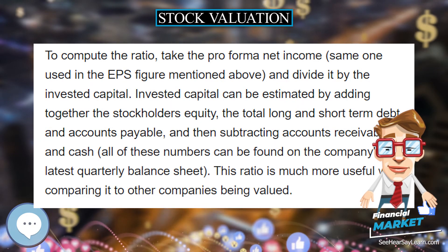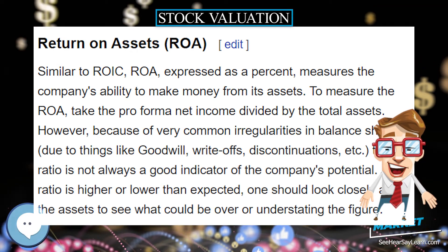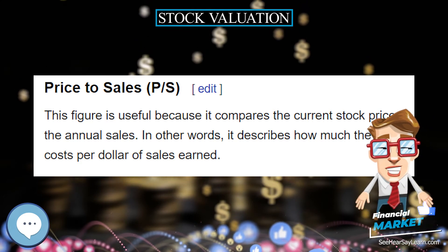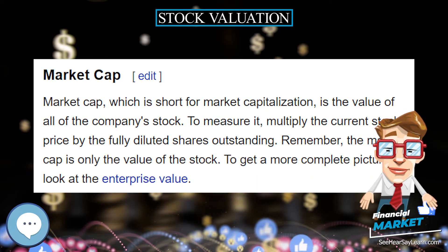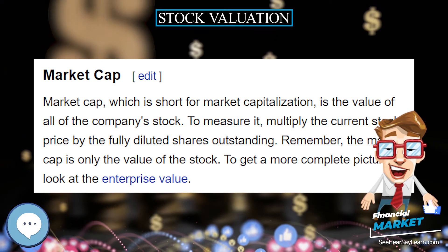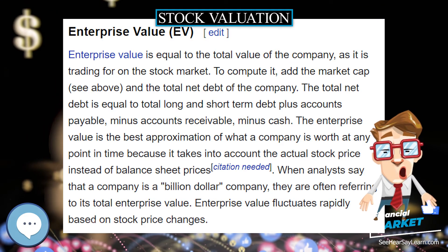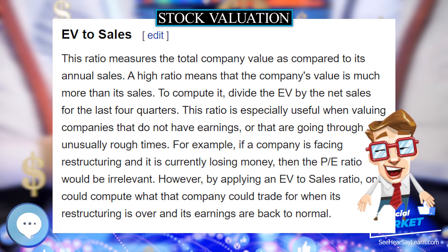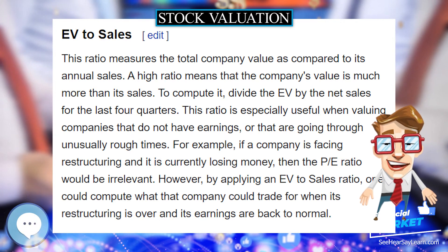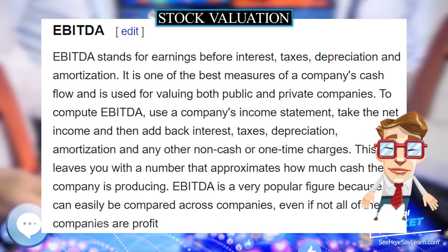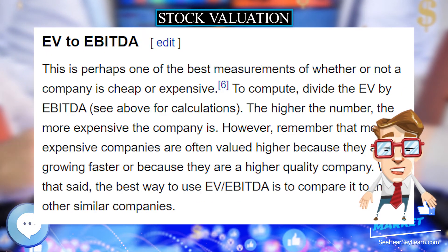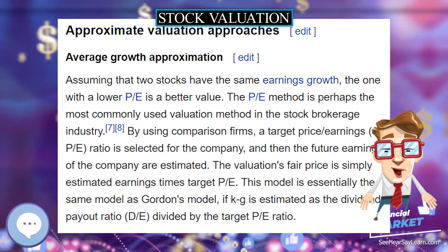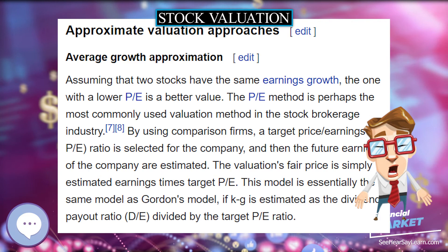EV to Sales. This ratio measures the total company value as compared to its annual sales. A high ratio means that the company's value is much more than its sales. To compute it, divide the EV by the net sales for the last four quarters. This ratio is especially useful when valuing companies that do not have earnings, or that are going through unusually rough times. For example, if a company is facing restructuring and is currently losing money, then the PE ratio would be irrelevant. However, by applying an EV to Sales ratio, one could compute what that company could trade for when its restructuring is over and its earnings are back to normal.